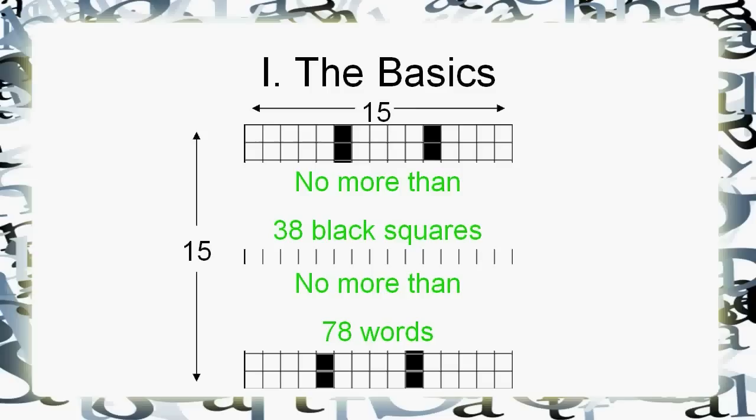When you're done putting in the black squares, you can't have more than 78 words in the puzzle. These aren't hard and fast, but those are good guidelines. Also, no one-letter words and no two-letter words in the puzzle — you've got to have all three-letter words or more.